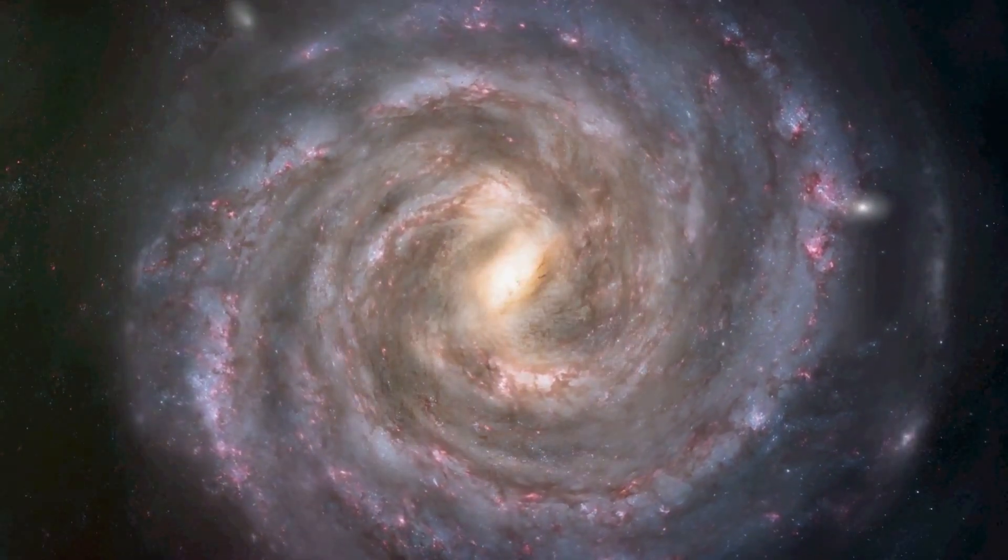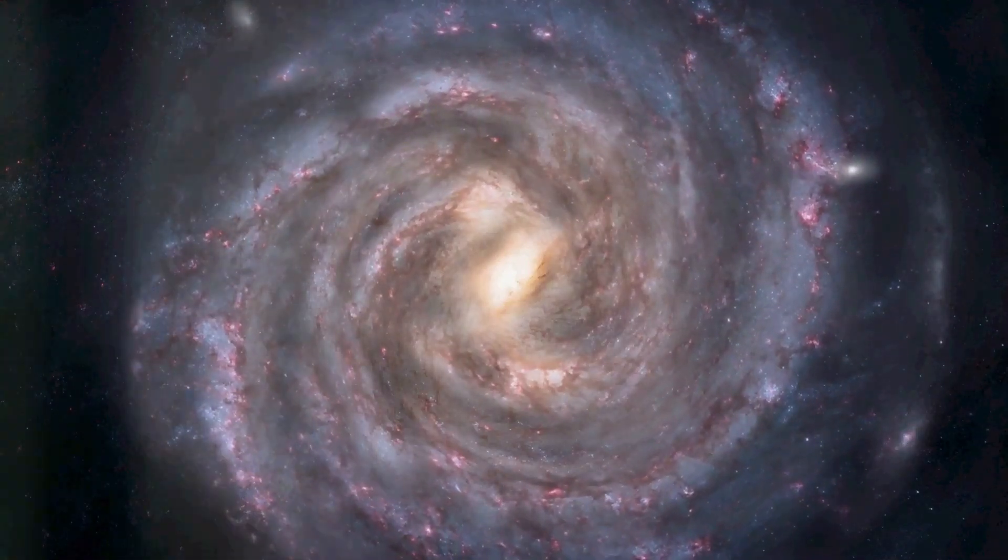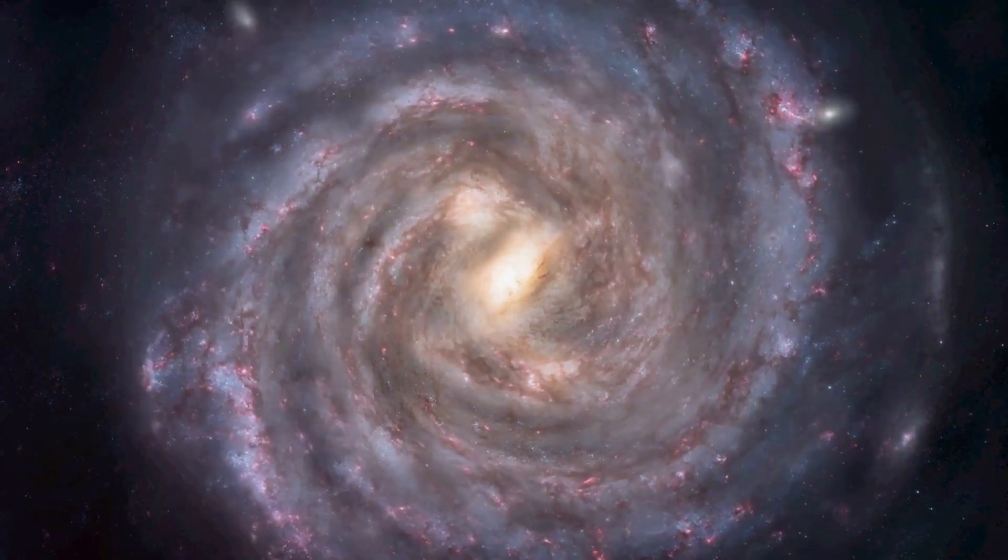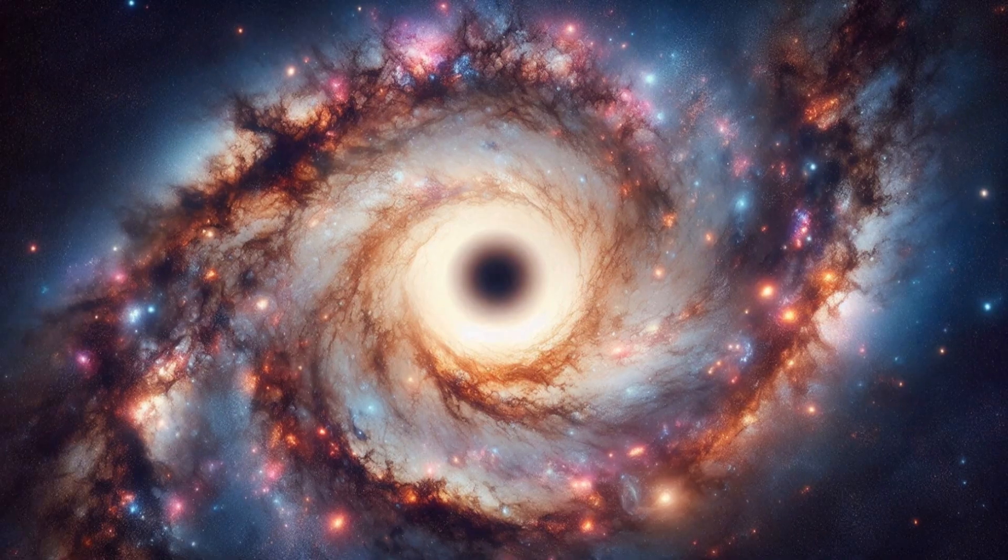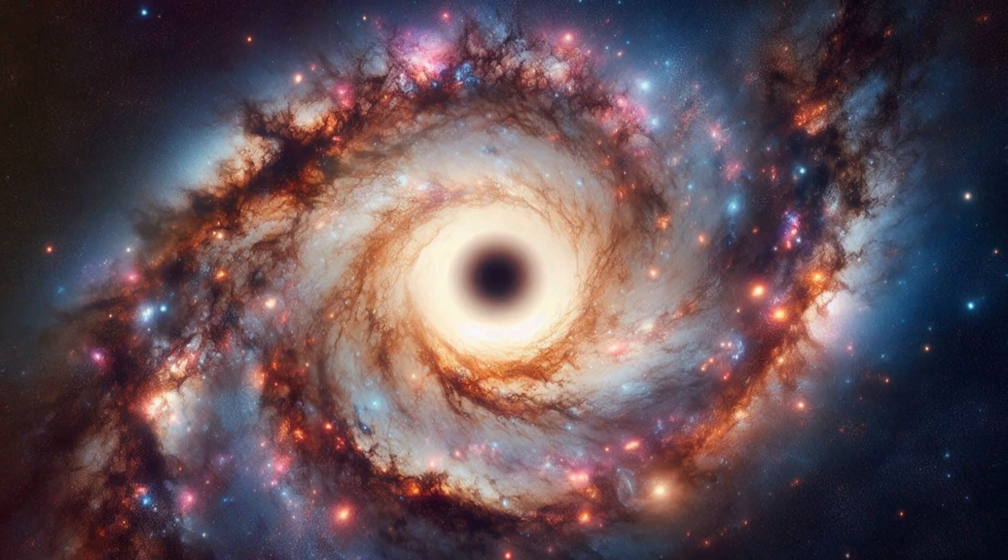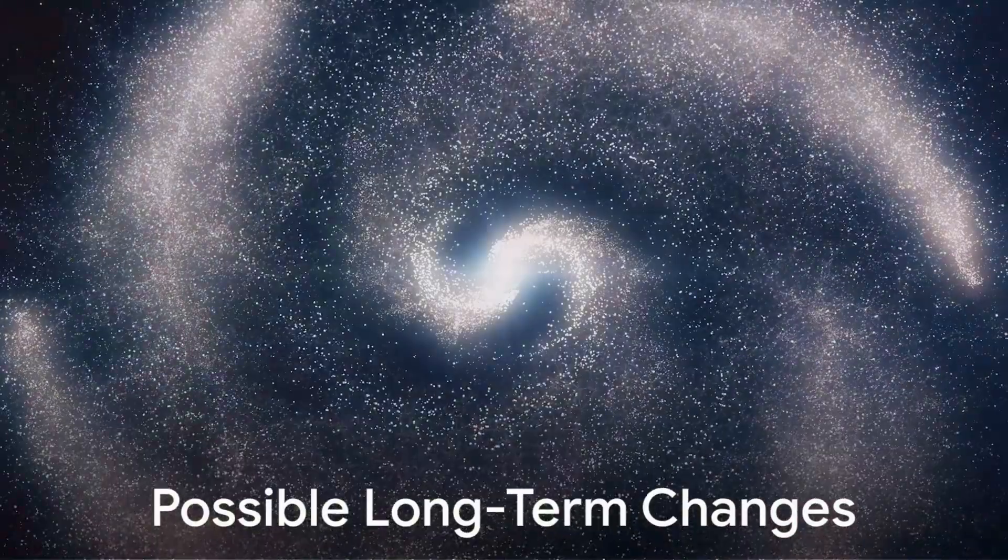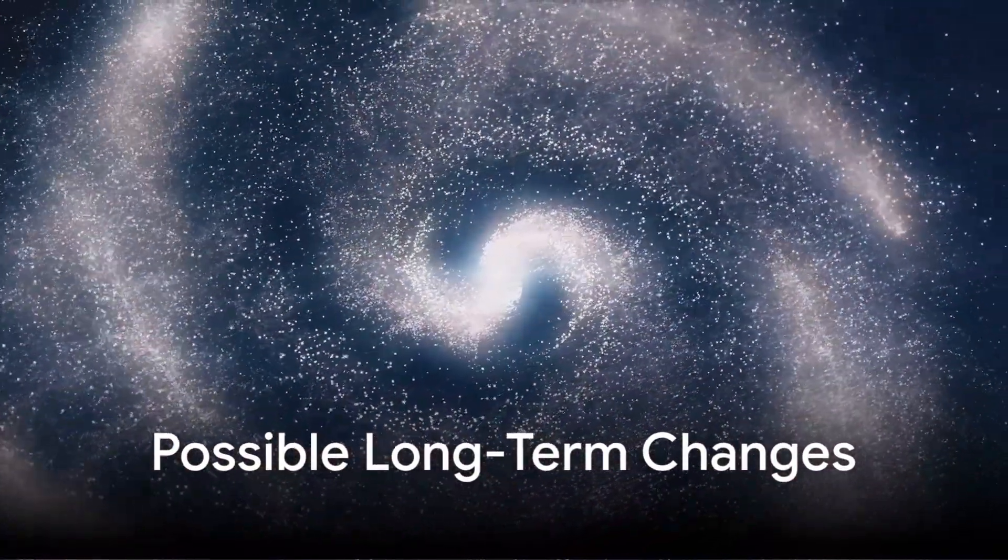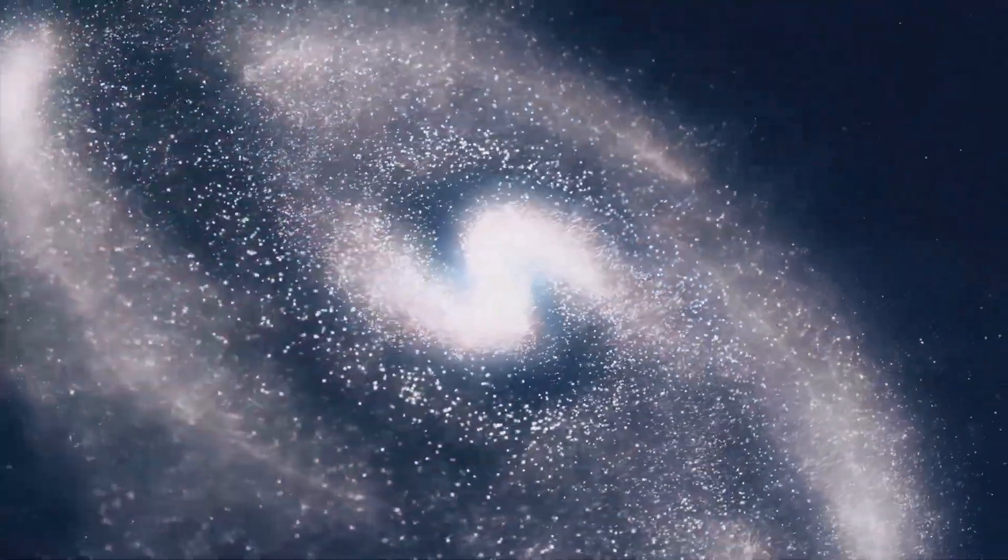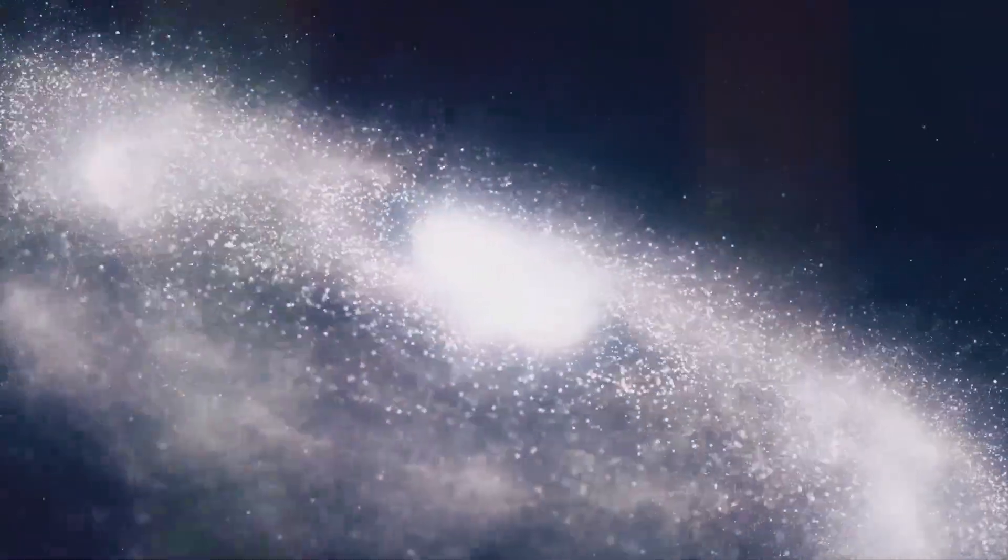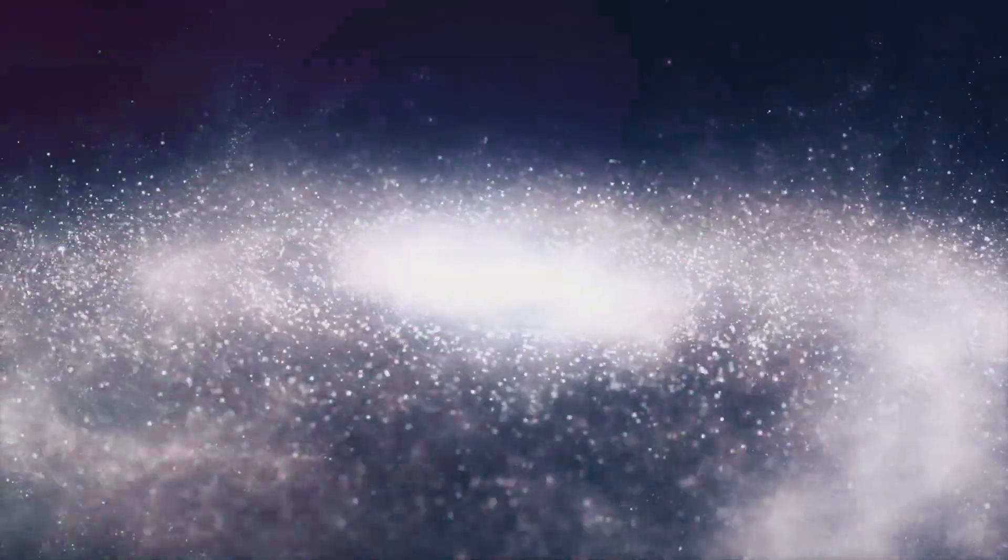In summary, the Milky Way's stability comes from a combination of dark matter, gravitational interactions among stars, and the ability to withstand local disturbances. Even the sudden disappearance of Sagittarius A wouldn't jeopardize the integrity of our galaxy as a whole. While the immediate effects of Sagittarius A star's disappearance would be dramatic, the long-term changes to the Milky Way could reshape our galaxy in profound ways.